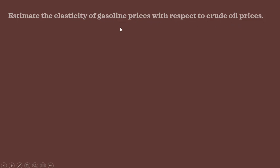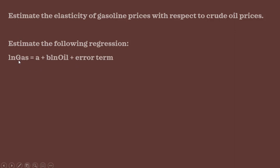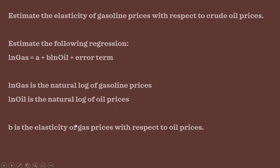Crude oil is an important input in the production of gasoline. We're going to estimate the following regression to do that. Our dependent variable is the natural log of gasoline prices. Our key independent variable is the natural log of crude oil prices. This coefficient B is going to be the coefficient of interest — it's going to be the elasticity of gas prices with respect to oil prices. Because we're using this double log functional form, the coefficients will represent elasticities.